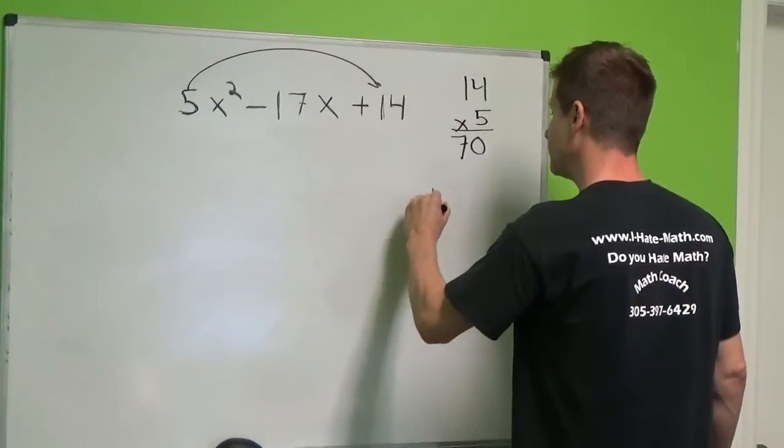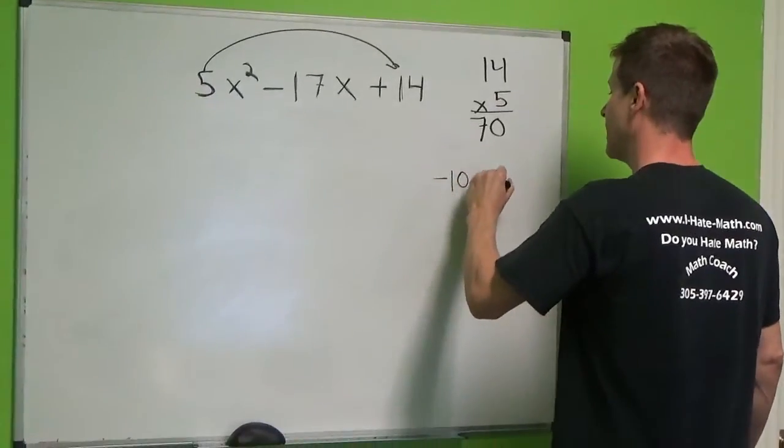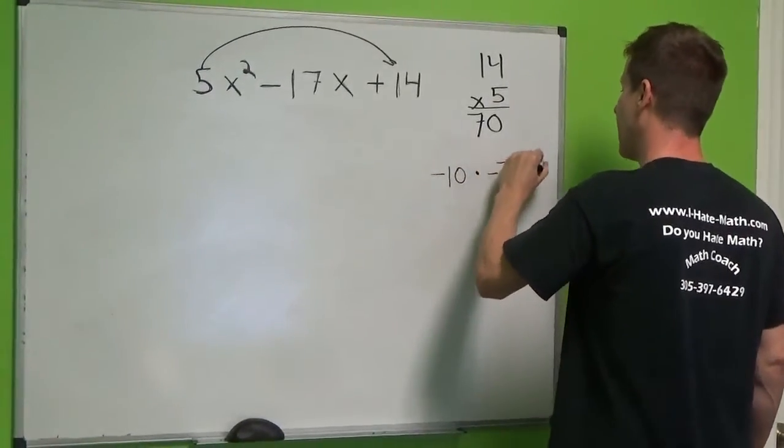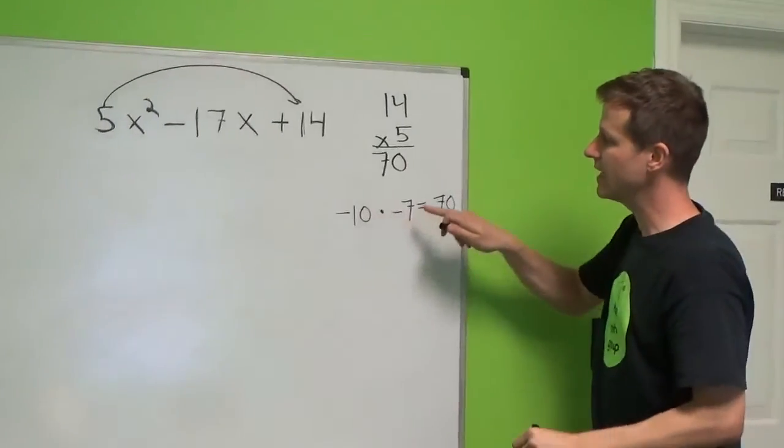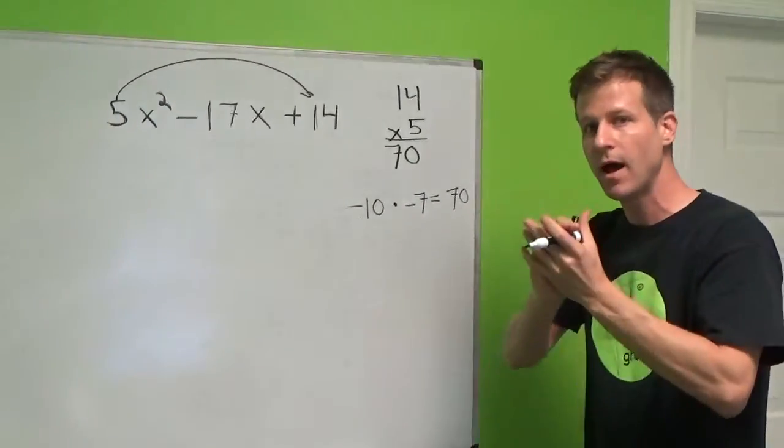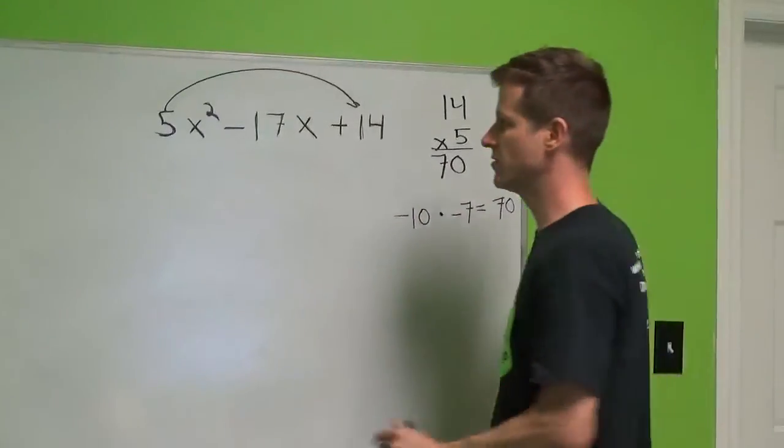We can use a negative 10 times a negative 7, which is a positive 70, which we're looking for. And a negative 10 and a negative 7, when you combine, give us negative 17. That's what we're going to use.